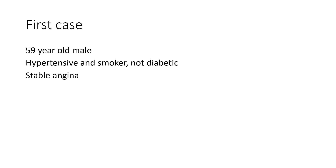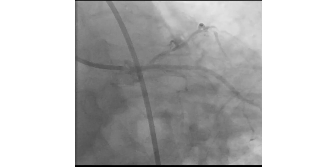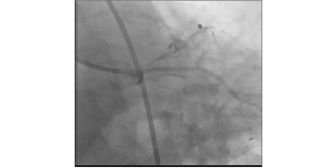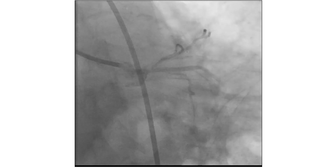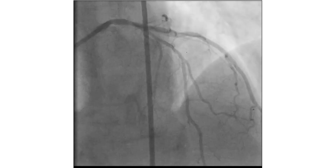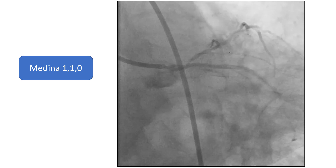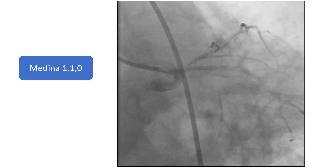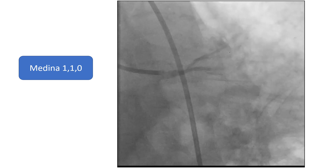The first case is a 59-year-old male who is hypertensive and a smoker, not diabetic, with stable angina. This is an apicaudal view of the left coronary artery. It shows a distal left main stem lesion with a critical lesion at the ostium of the LAD. The lesion is extending to the mid part of the LAD as shown in this cranial view. The lesion complex is continuous with a large OM, which appears to be free of disease, and the classification is Medina 1-1-0.